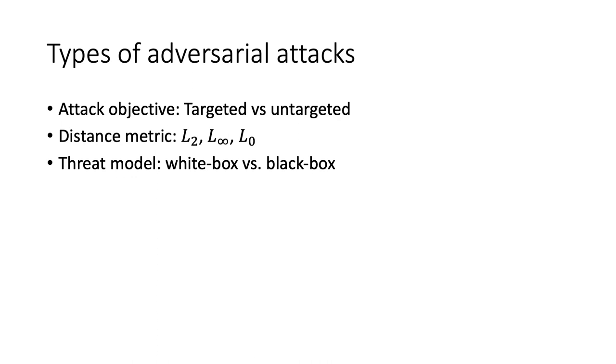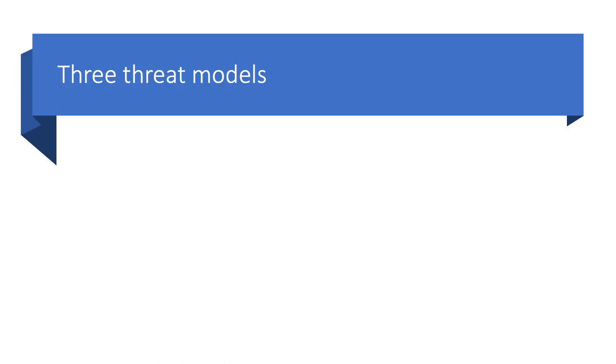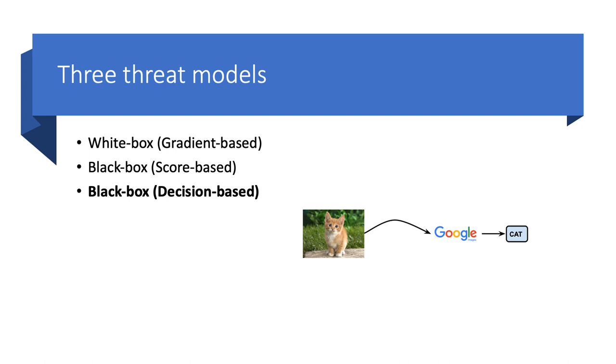The most important criteria for grouping adversarial attacks is the threat model. There are three kinds of threat models. The white box threat model assumes access of an attacker to model details. Under this threat model, people have proposed gradient-based approaches to generate adversarial examples. There is also the black box threat model, where an attacker does not have access to model details. The first type of the black box threat model assumes access to output scores of the model. A more practical setting in the real world is the decision-based black box threat model, which assumes the only thing available to the attacker is the output label or decision on a given input image. The decision-based setting is which we will focus on in this talk.